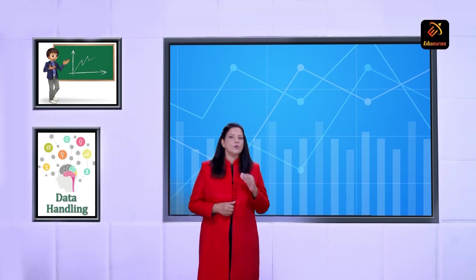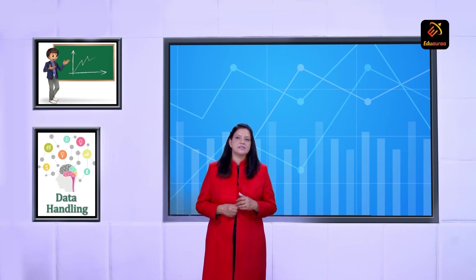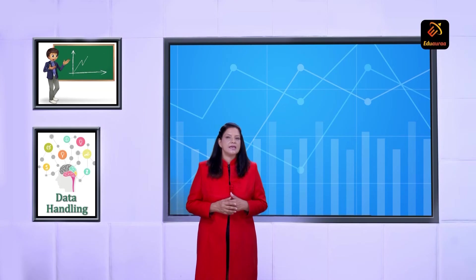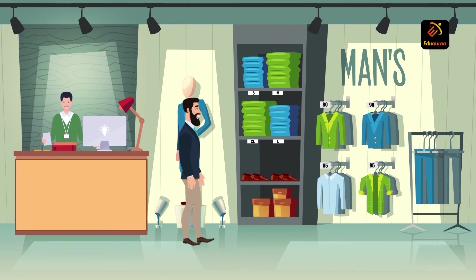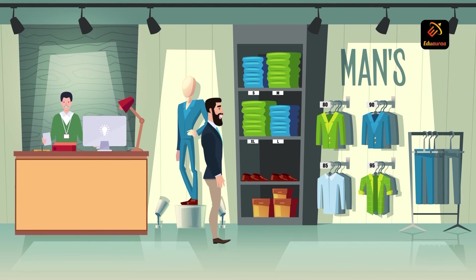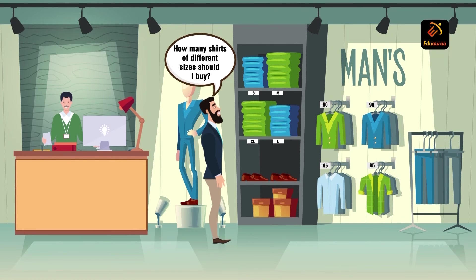As we know, mean is not the only measure of central tendency or the only form of representative value. For different requirements from the data, other measures of central tendencies are used. Let's take an example: suppose a shopkeeper wants to buy his stock of shirts for a festive season. How does he decide the number of shirts of different sizes?